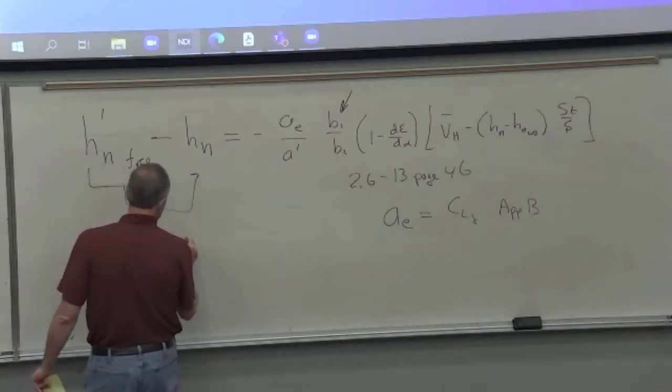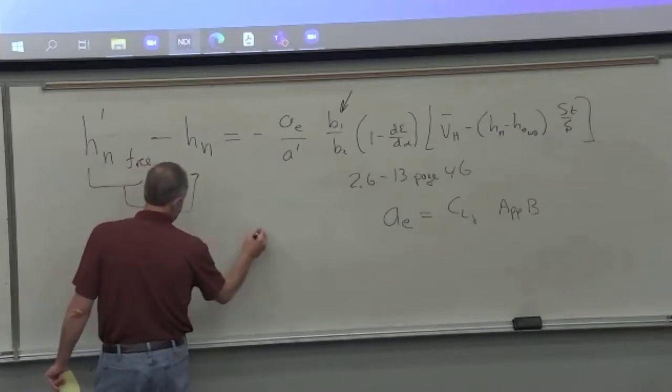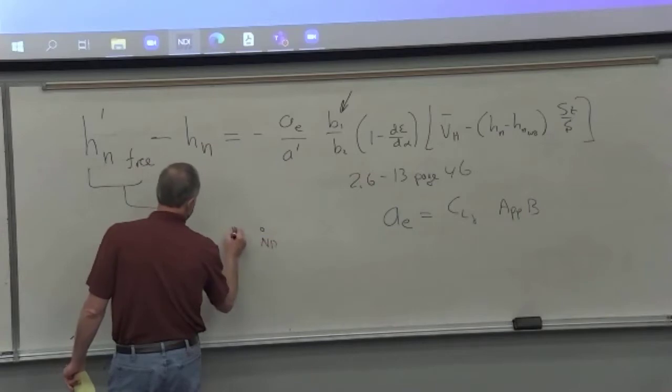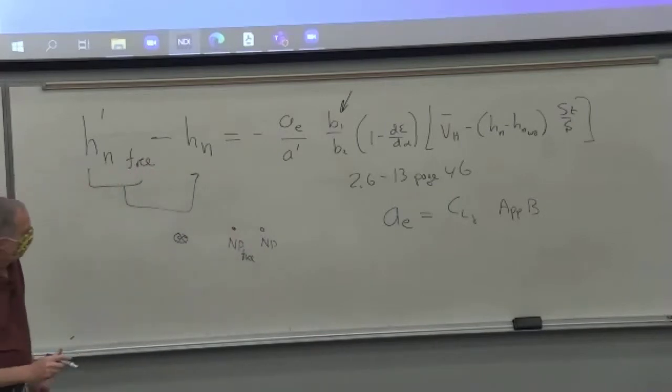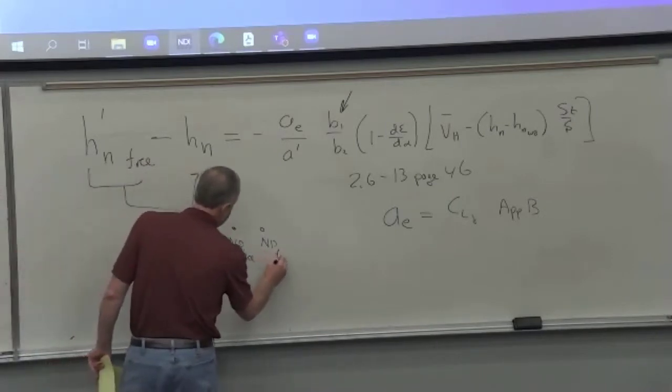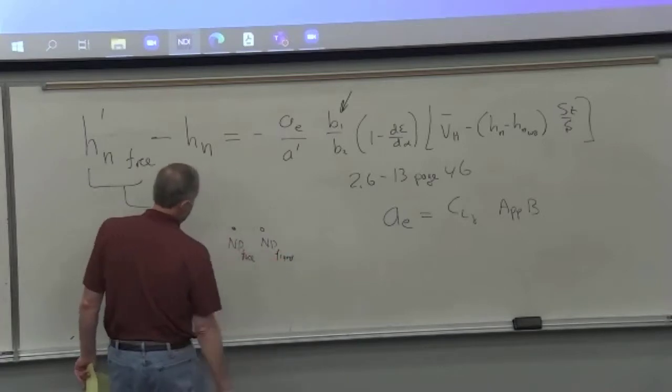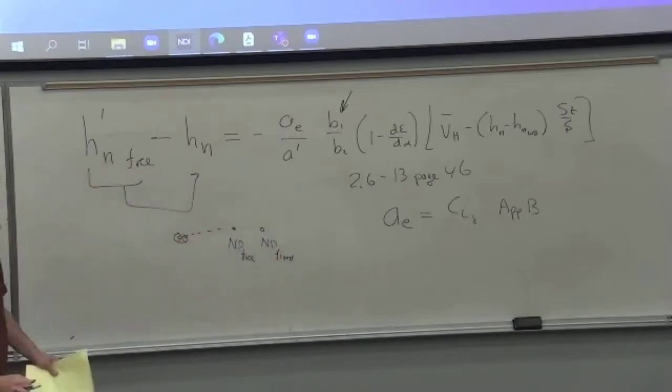As we discovered over here, often the stick-free neutral point is in front of the stick-fixed. And so we need to make sure that CG is in front of that as well. All right, we'll continue this more next time.